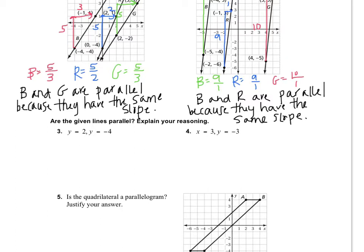Numbers three and four are a little different because we don't have pictures. Remember, the slopes of Y-equals lines are zero and X-equals lines have no slope. So you can't really say that zero equals a no-slope. The way I'd like you to think about it is that these lines are horizontal because they're both Y-equals lines. If you didn't know that, go back and look at the 4.1 video.